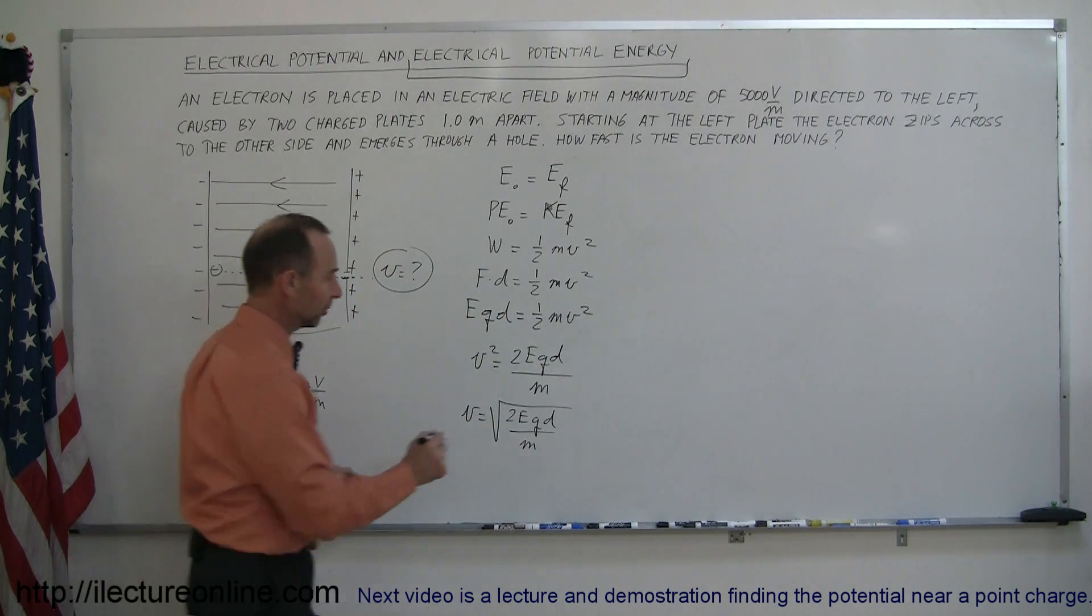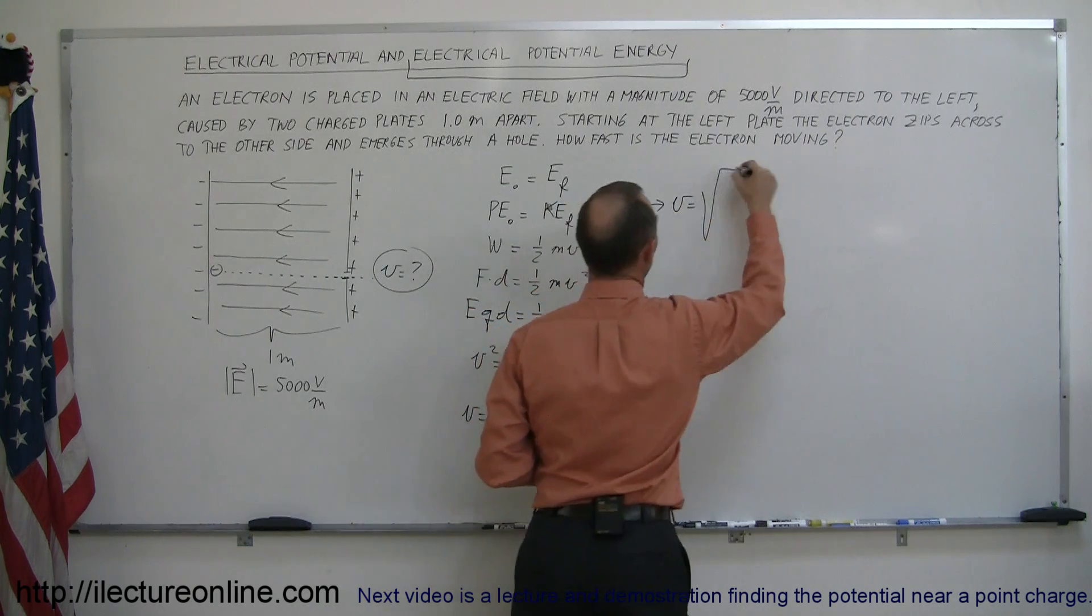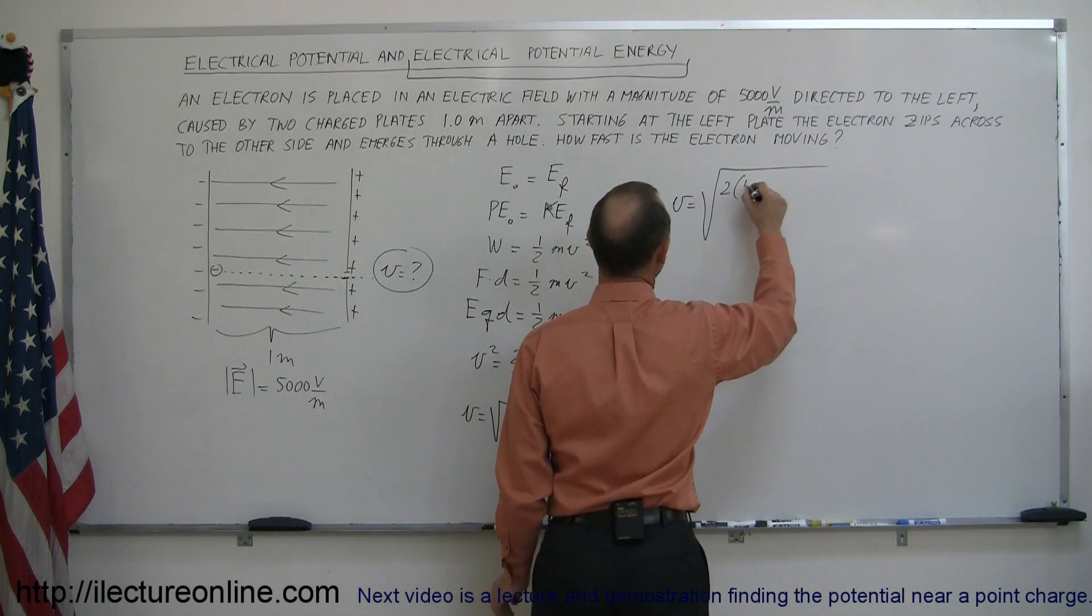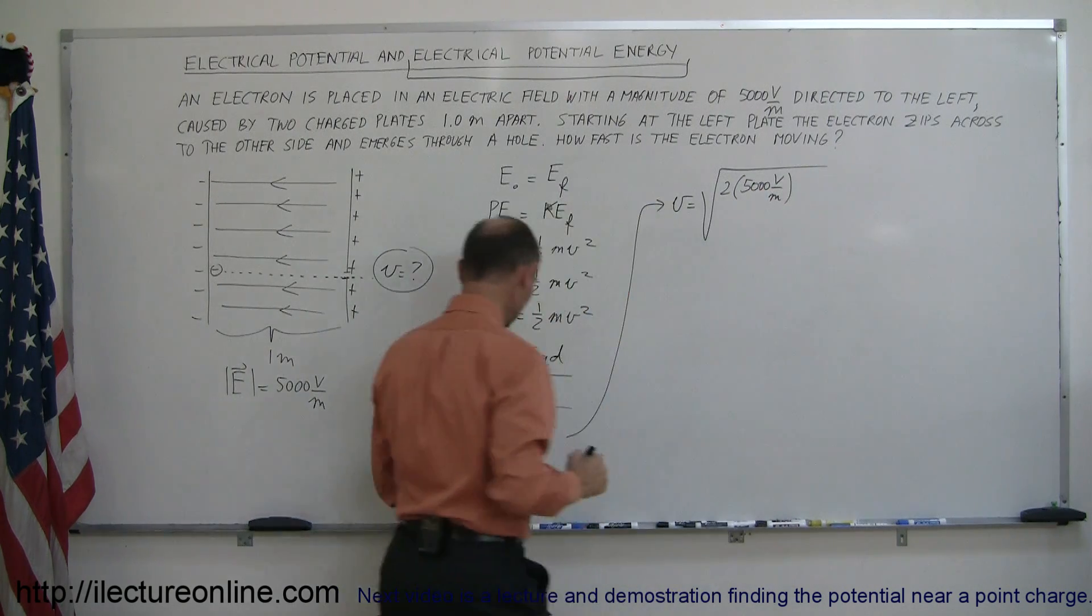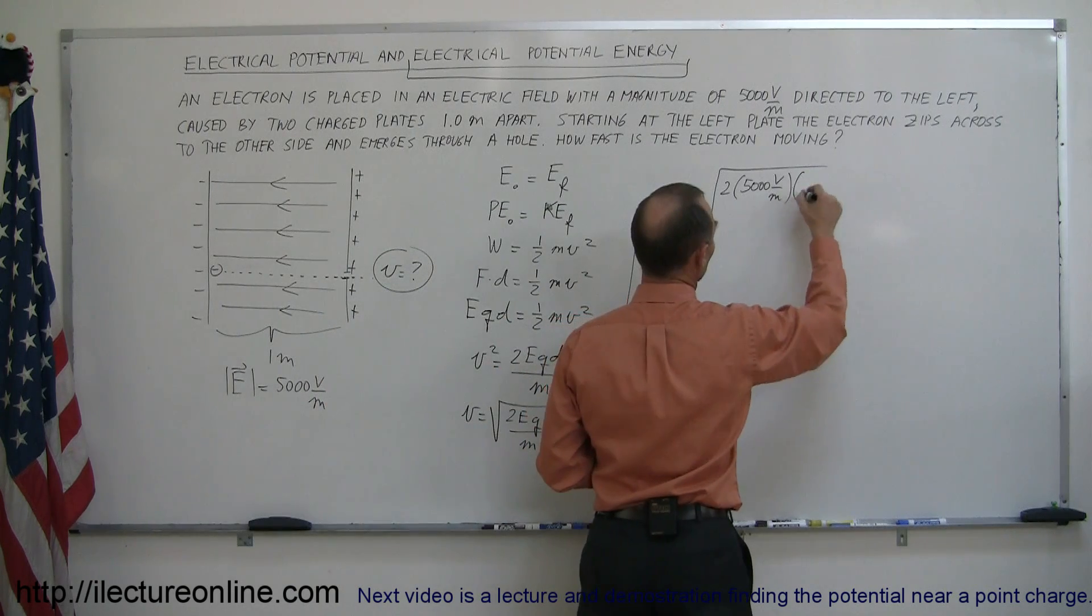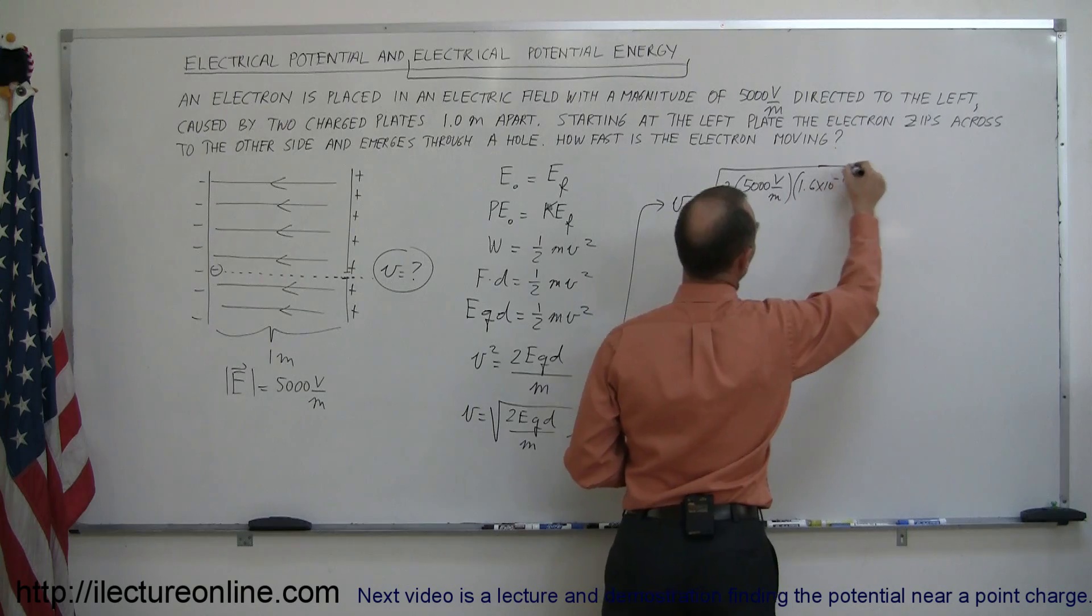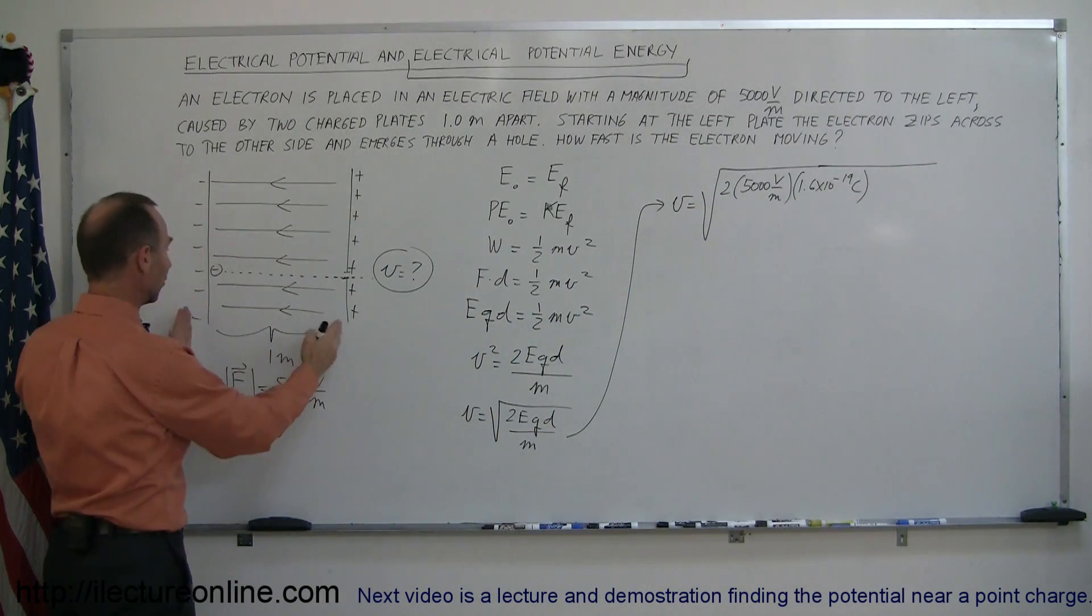Plug in all the right numbers. So the velocity is equal to the square root of 2 times the strength of the electric field which was 5,000 volts per meter times the charge of the electron which is 1.6 times 10 to the minus 19 coulombs and then times the distance and we travel the distance of one meter